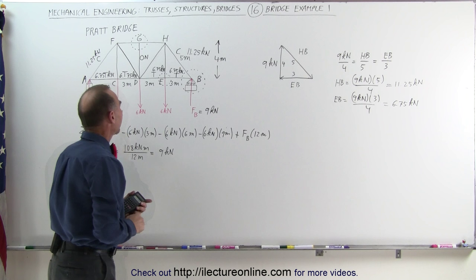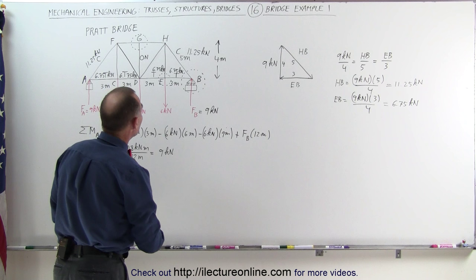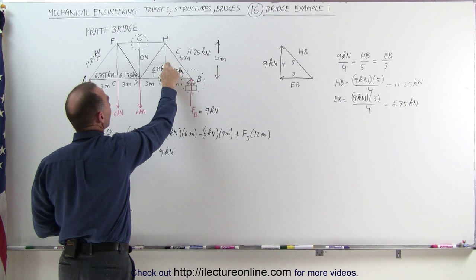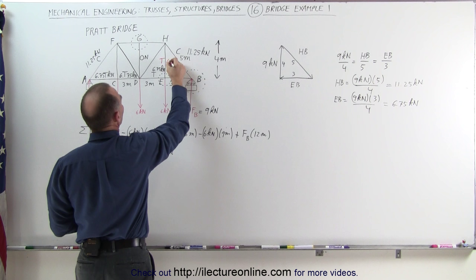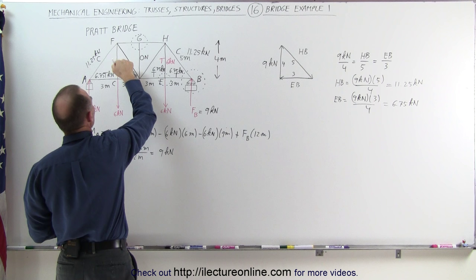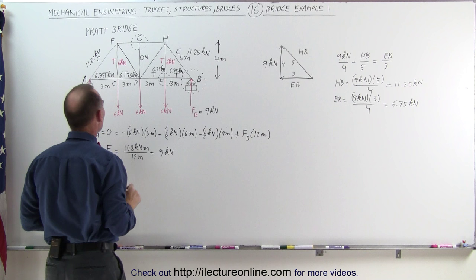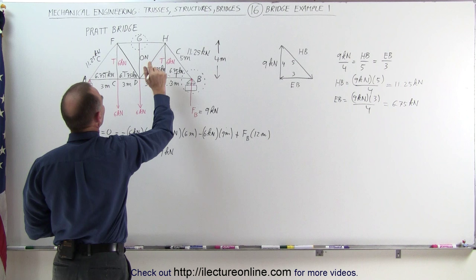Continuing the inspection of the beams, notice that if we have 6 kilonewtons pulling in this direction, there must be 6 kilonewtons pulling in this direction — meaning this beam must be under tension with 6 kilonewtons. And because of symmetry, we have 6 kilonewtons pulling in that direction, so that beam is also under tension at 6 kilonewtons. That takes care of these three members here and those three over there.